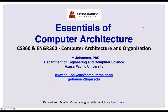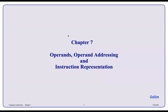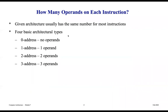Hello and welcome back to the Essentials of Computer Architecture, Computer Architecture and Organization. We're going to continue working through the material in our textbook. The topic we're going over now is Chapter 7, Operand Addressing and Instruction Representation. We're about a little more than halfway through our section on processors, and this is another developmental step in understanding how computing systems operate.